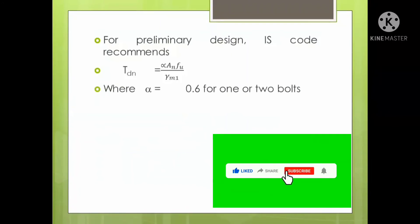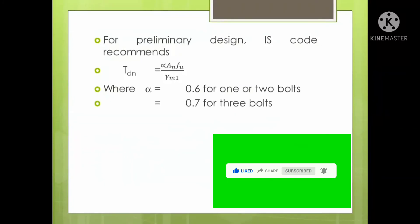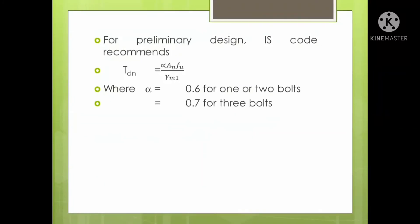Here alpha is 0.6 for 1 or 2 bolts, 0.7 for 3 bolts, and 0.8 for 4 or more bolts.